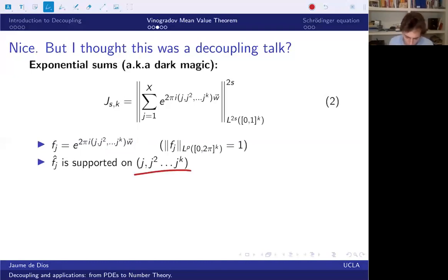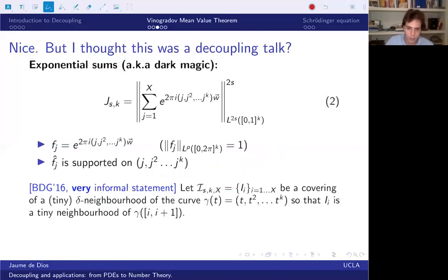And all those points are on a certain curve, which is called the moment curve, which is the curve t, t squared, ... t to the k. So we're going to do the same thing that we did with the parabola. But now we're going to build our decoupling estimate around this weird curve. And that was what Bourgain and Demeter did in 2015. And basically what they say is that if you get this curve, then you look at tiny neighborhoods of this curve and you split them into intervals. So that like one fj is on each interval. Then we get this decoupling estimate where you see the same k, k plus one appearing.